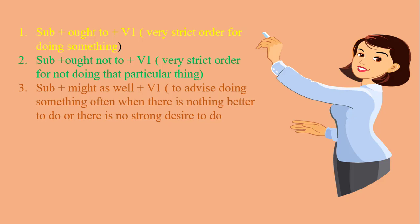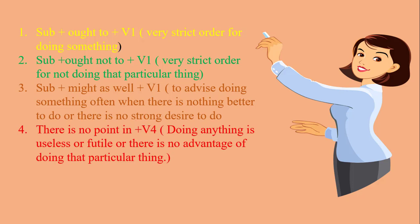The last structure is there is no point in + V4. We use it when doing anything is useless or futile, or there is no advantage to doing that particular thing. After reading the questions, if we find that after doing the action there is no advantage, then this structure is used: there is no point in + V4.